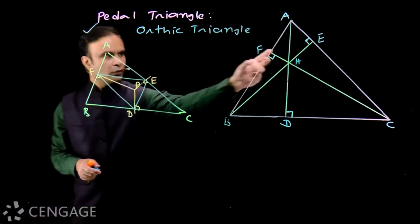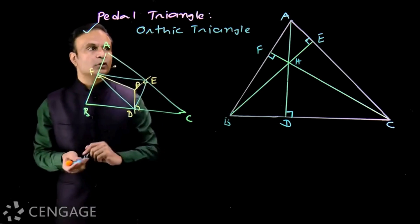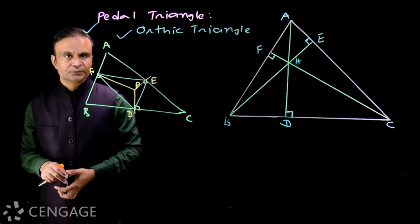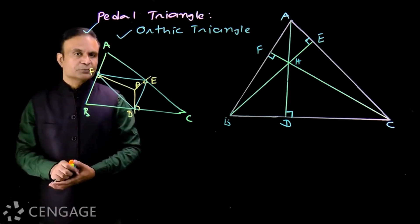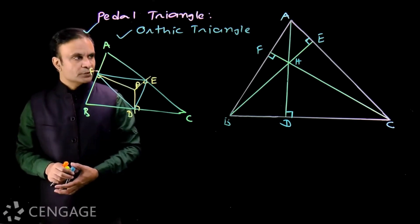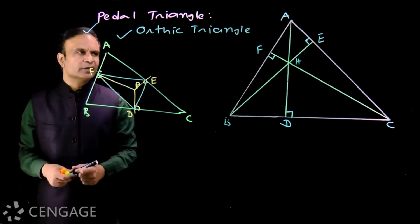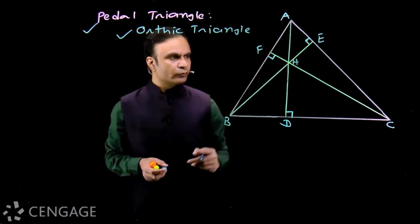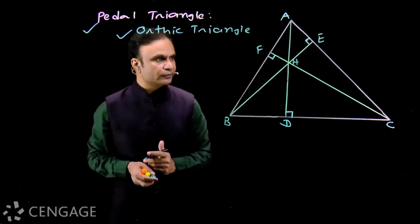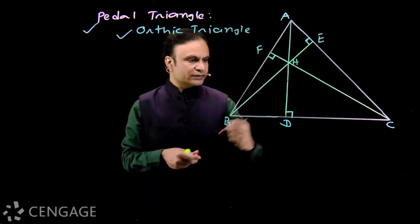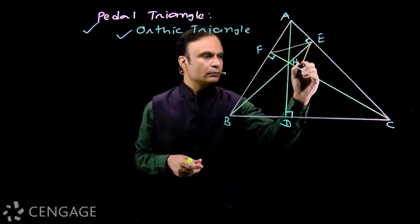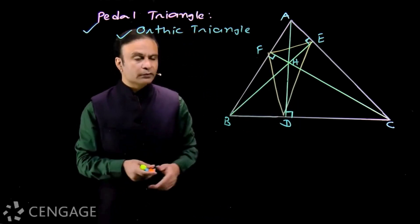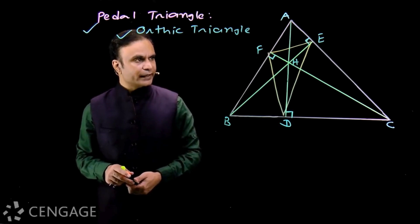In the special case when point P is the orthocenter H, the pedal triangle is called the orthic triangle. So the orthic triangle is one special pedal triangle in which P is the orthocenter of the triangle. In our syllabus, we consider the pedal triangle with respect to the orthocenter only, so we call the orthic triangle the pedal triangle.